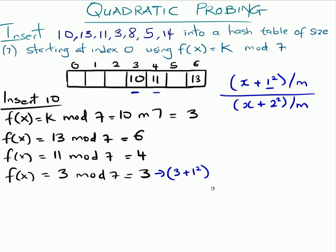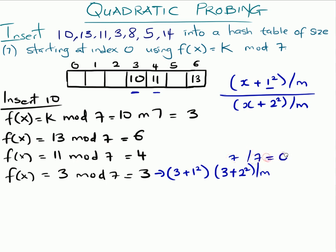4 mod 7 is 4, but position 4 is already filled, so we move to the next formula: 3 + 2² = 3 + 4 = 7. We don't have a location 7 since the table size is 7, so we apply mod: 7 mod 7 = 0. That means we insert 3 at position 0, resolving the collision.